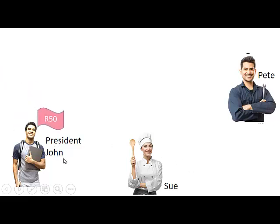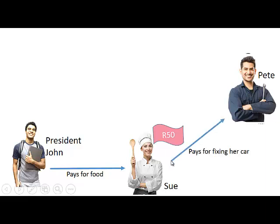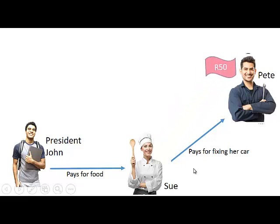John gets paid 50 Rand for being the president. He pays Sue 50 Rand for food, so now the 50 Rand belongs to her. Sue then uses this 50 Rand to pay Pete for fixing her car, so the 50 Rand goes to Pete.